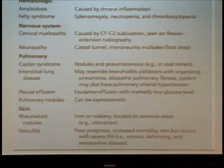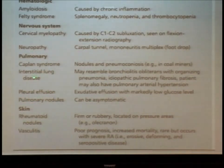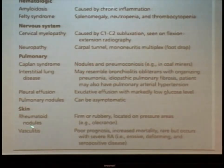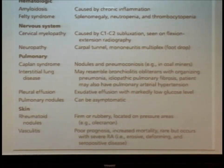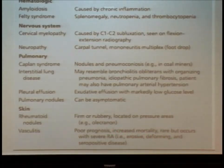Regarding lung manifestations: pleurisy and pleural effusions are most common, followed by pulmonary nodules and interstitial lung disease. Caplan syndrome — pneumoconiosis with nodules in coal miners — is not common. Vasculitis, which goes along with mononeuritis multiplex, is not common but I see it every year despite biologic therapy being available — because not everybody uses it.